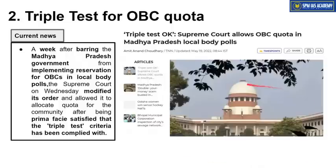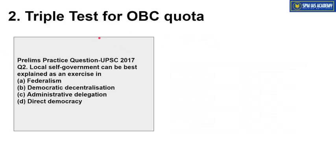The current news is that the Madhya Pradesh government introduced a law providing reservation for OBCs in local bodies. The Supreme Court applied this triple test to check whether the law brought by the Madhya Pradesh government fulfills the triple test criteria. The Supreme Court has now ruled that the triple test is satisfied and has allowed OBC quota in Madhya Pradesh local body polls.